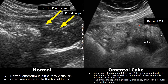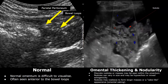Ascitic fluid is present. In this image, the omentum has many hyperechoic nodules of varying sizes. Discrete nodules or masses may be seen within the omentum, giving it a heterogeneous appearance overall.